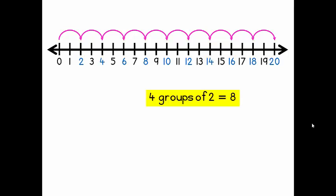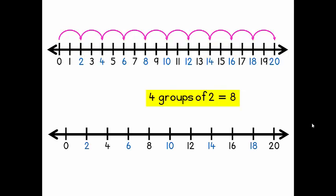Let's see what four groups of two look like on the number line. I have a number line that's numbered from 0 to 20 but in twos. So I want to see four groups. There's one group, two groups, three groups, four groups. So four groups of two give me eight.